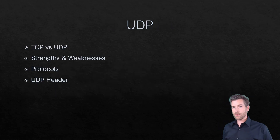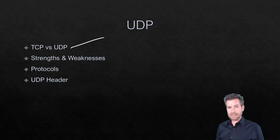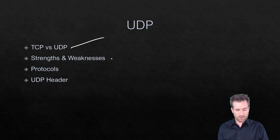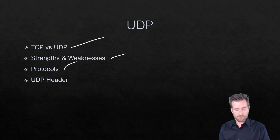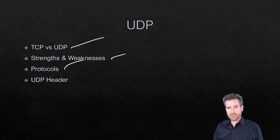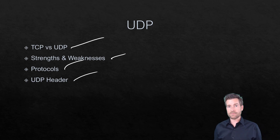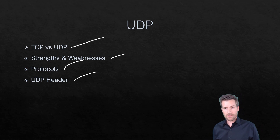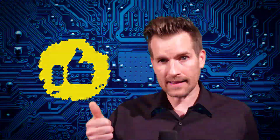So that was quick and dirty — we ran through it. That's TCP and UDP. We talked about some of the strengths and weaknesses that UDP has, some of the protocols associated with it, and then we took a look at the UDP header. So that's UDP in a nutshell. I hope these videos are really helping you out — if so, could you hit that like button?